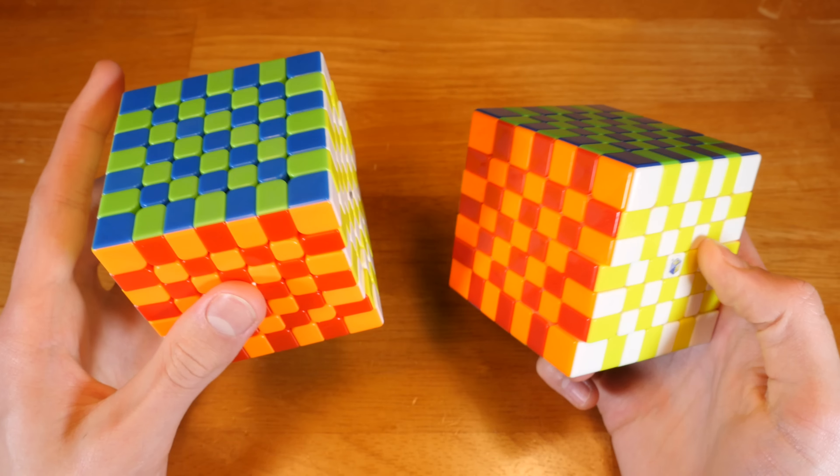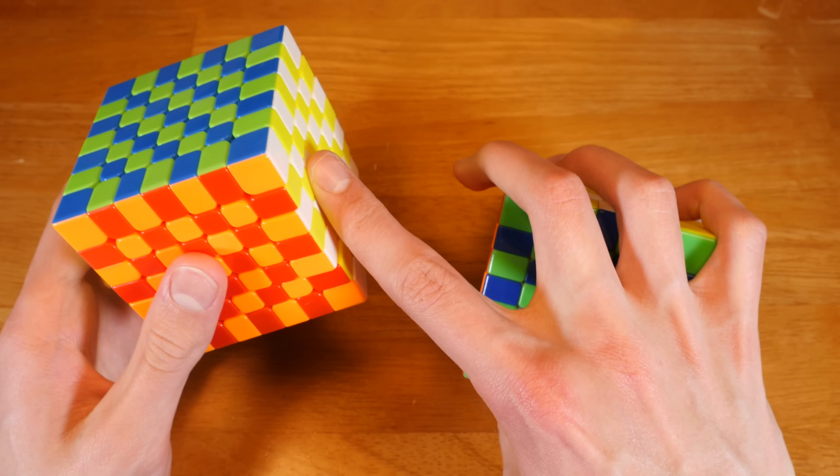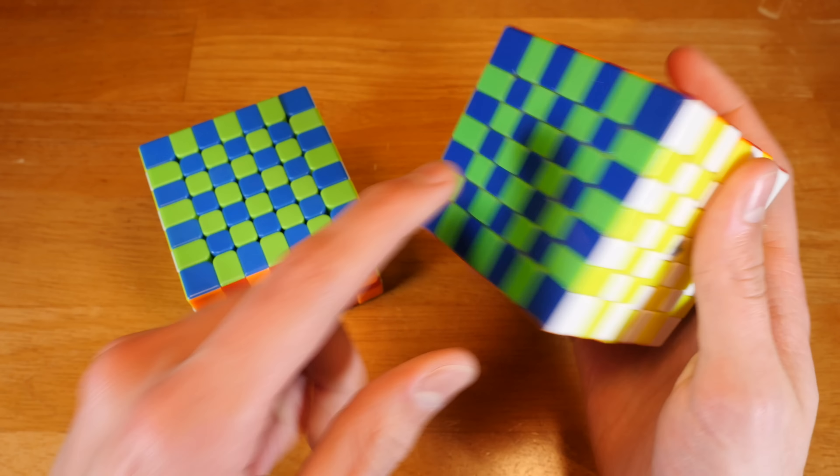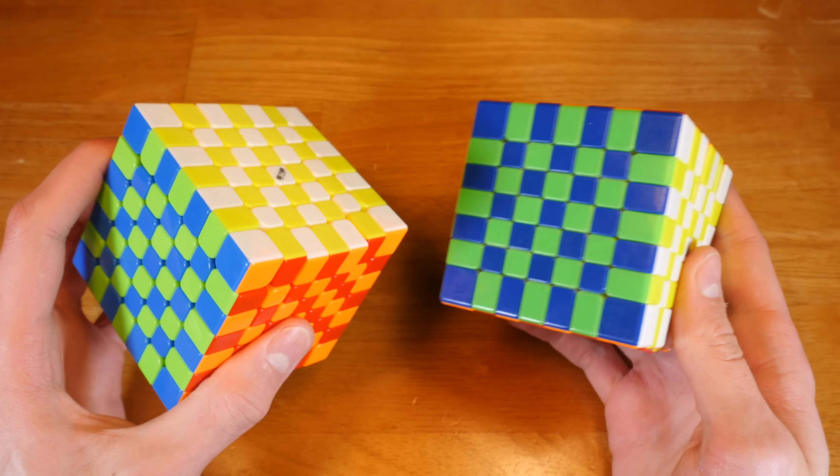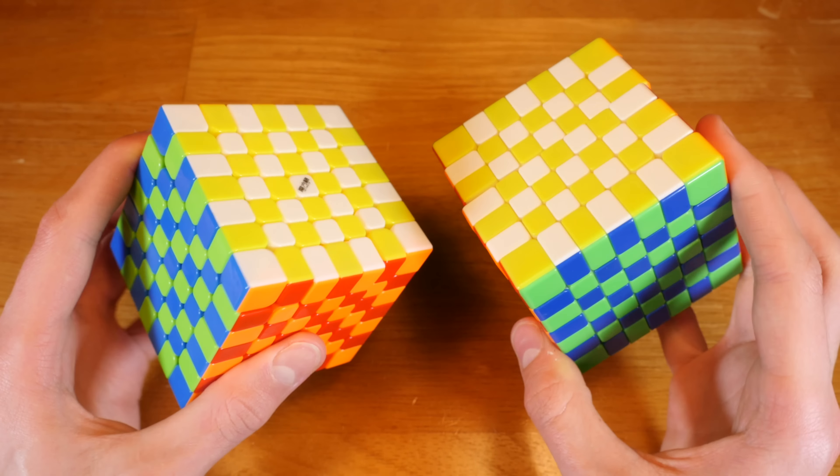What's up guys, this is Laser Monkey, welcome back. There is no question that the ChiChi WuJi on the left and the Yuxin Huanglong on the right are the two best 7x7s on the market, but which one should you get?